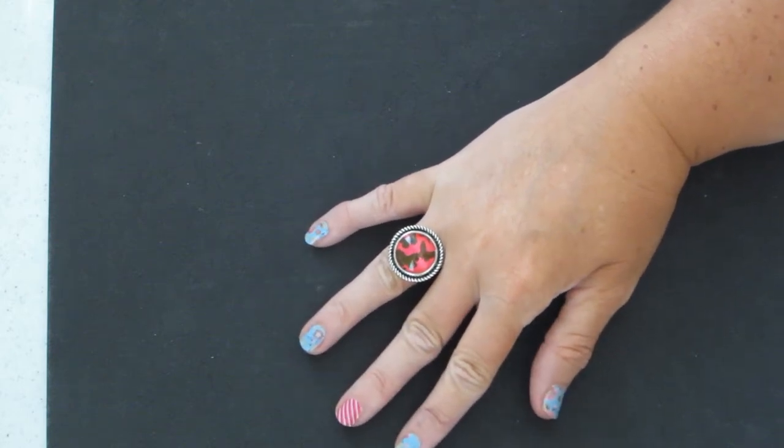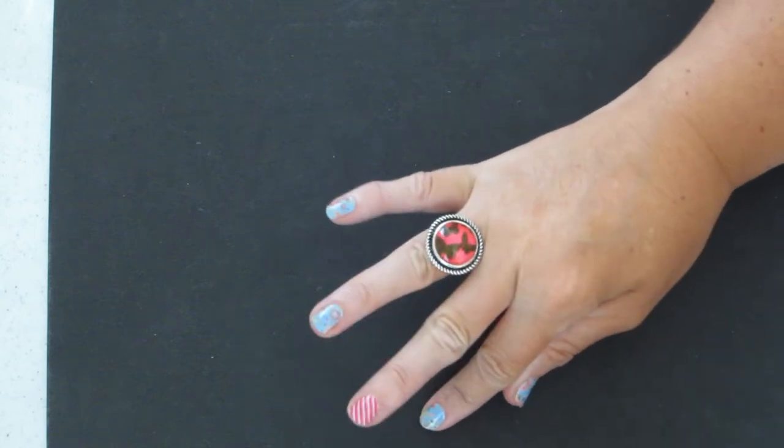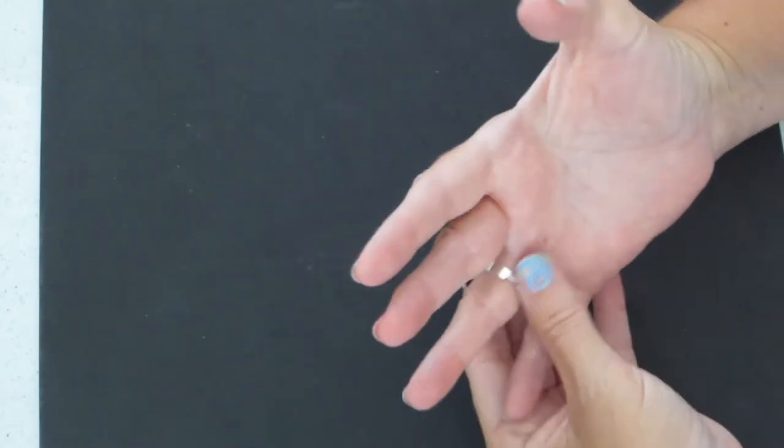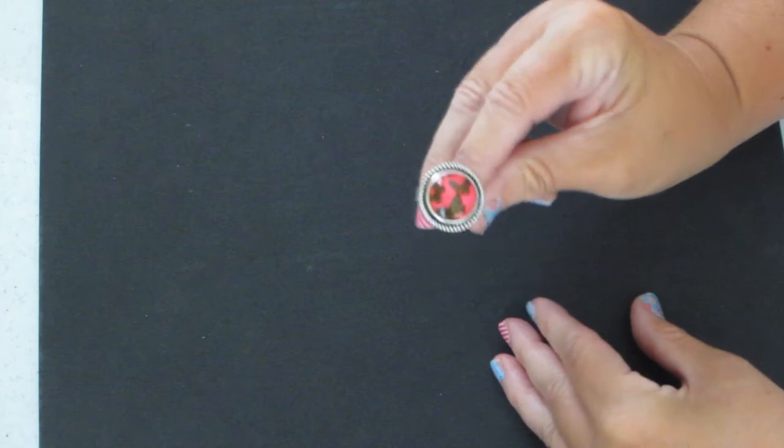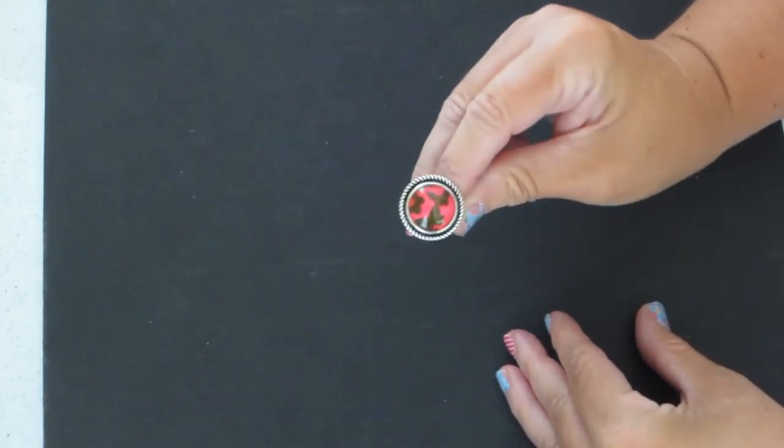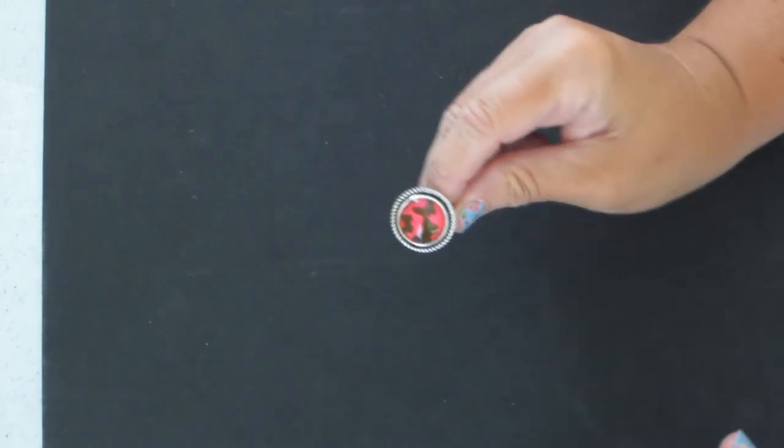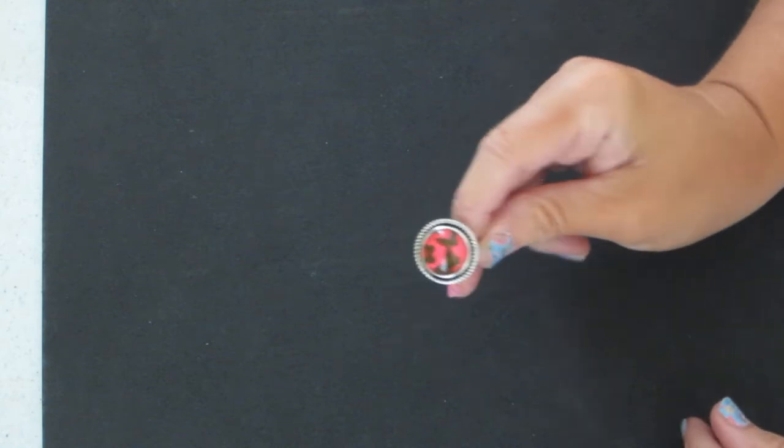Today I'm going to show you how I made this ring. I really love it. I think it's really cool. It's got butterflies and it's pink—that's my favorite things. So let's get started.